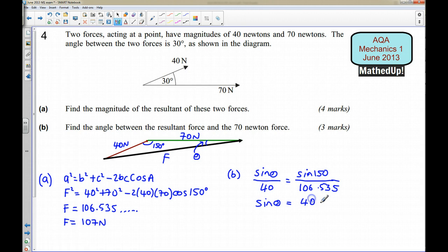So that's going to give me 40 sin 150° over 106.535.